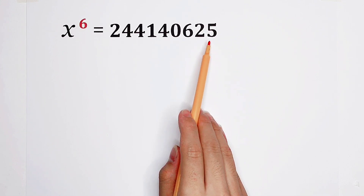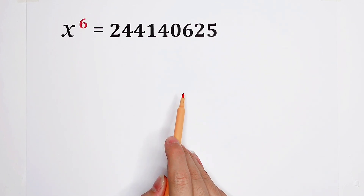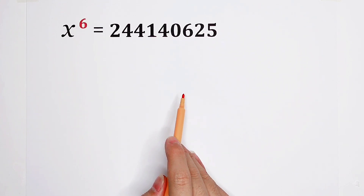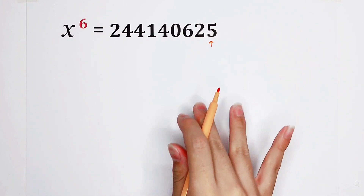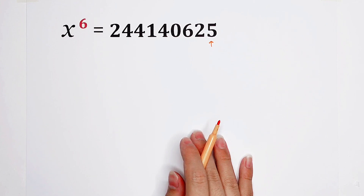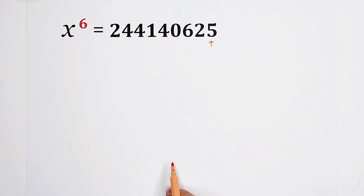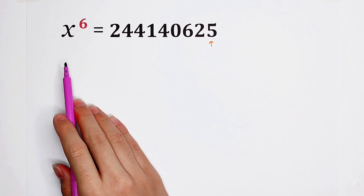Ugly. However, easy. My question is: what did you notice? The last digit — have you noticed? It is five. What does it mean? Five is the last digit. There is something valuable in it. From this information, what can we get? Something about x.